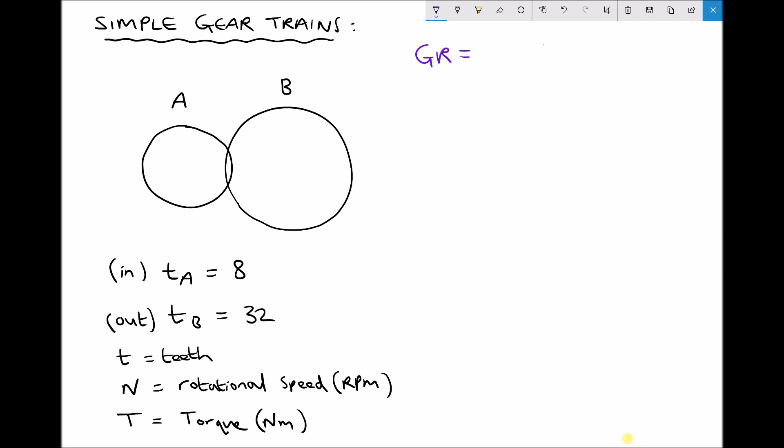Our gear ratio is the number of teeth on the output, 32 in this case, over the number of teeth on the input, 8, giving us a gear ratio of 4.